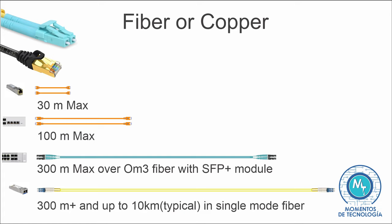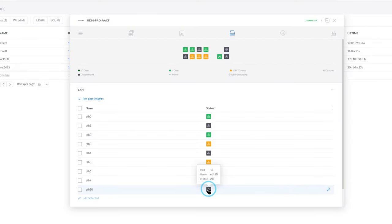We can also use these SFP or SFP+ ports to switch to a 10 gigabit copper connection, limited to 30 meters, but it is a 10 gigabit link over Cat 6 or Cat 7 copper cable. We may exceed this standard limit by a few meters depending on the quality of the accessories and cabling.